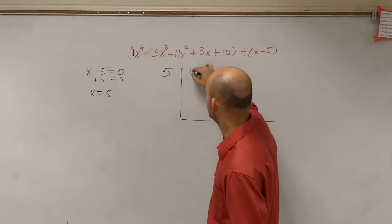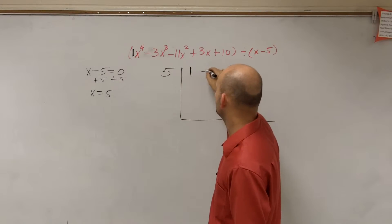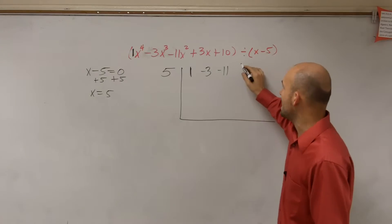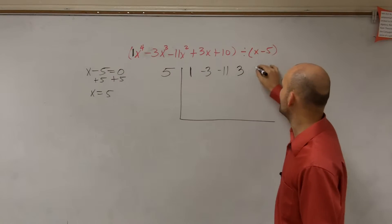So I just plug x to the 4th, the coefficient is 1. x cubed, the coefficient is negative 3. x squared, the coefficient is negative 11. For x, the coefficient is 3. And then my constant is 10.